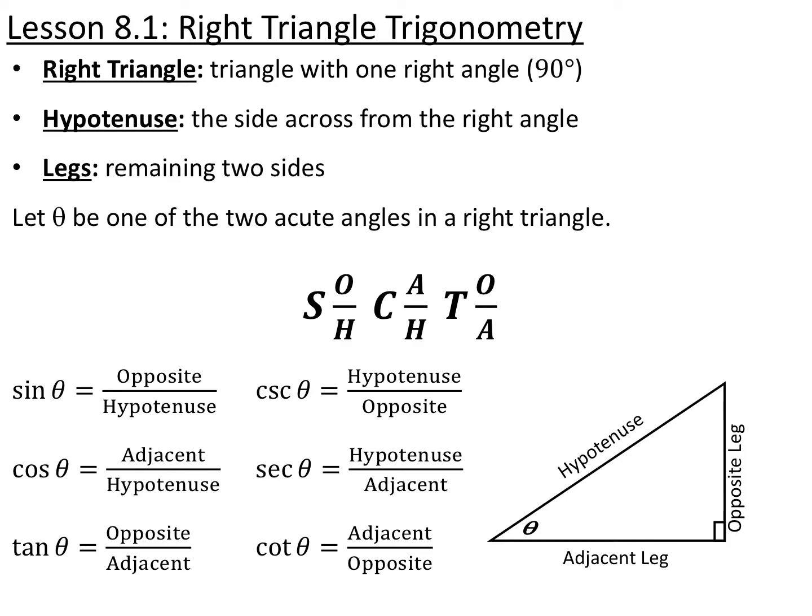Section 8.1 is right triangle trigonometry. A little bit of review: a right triangle is a triangle that has one right angle, or a 90 degree angle. The hypotenuse is the side that's across from that right angle, which is always the longest side. And the legs are the two remaining sides.